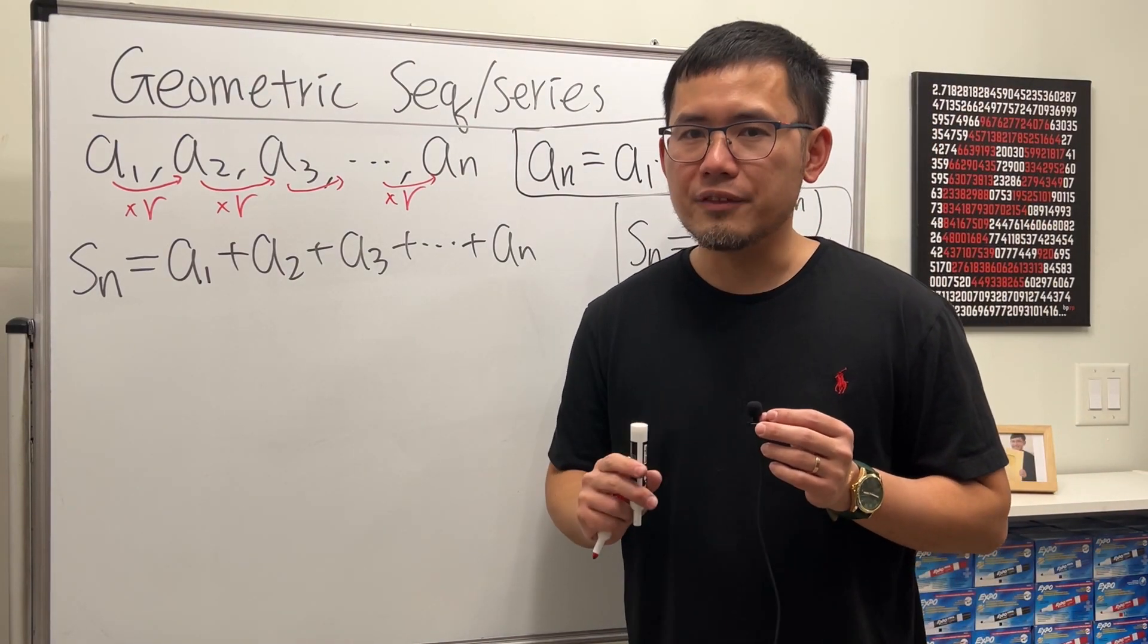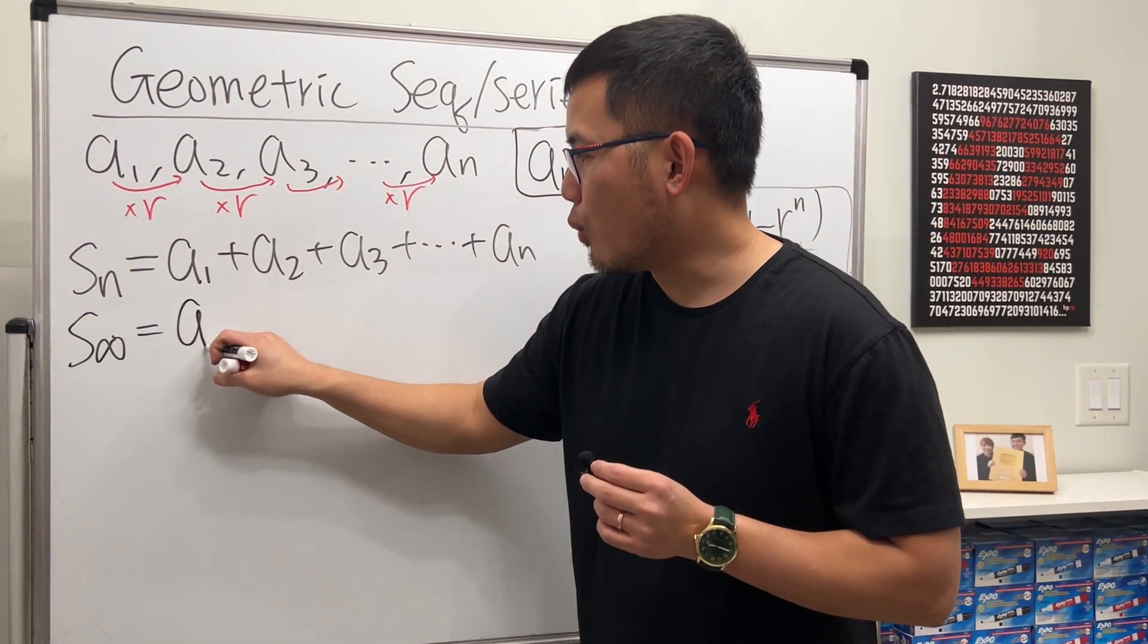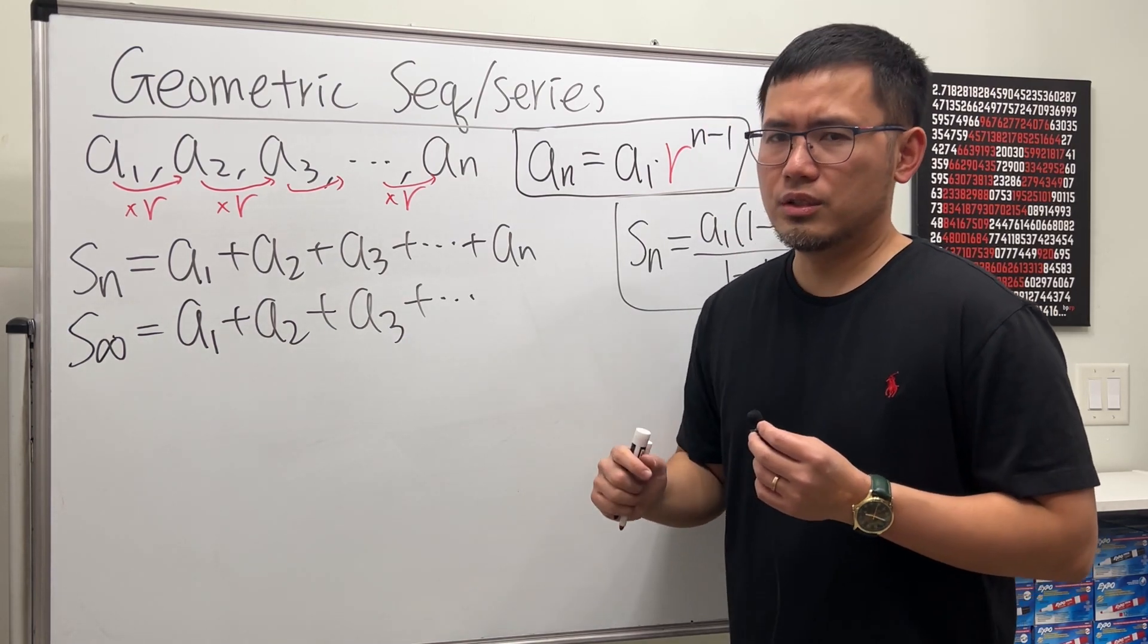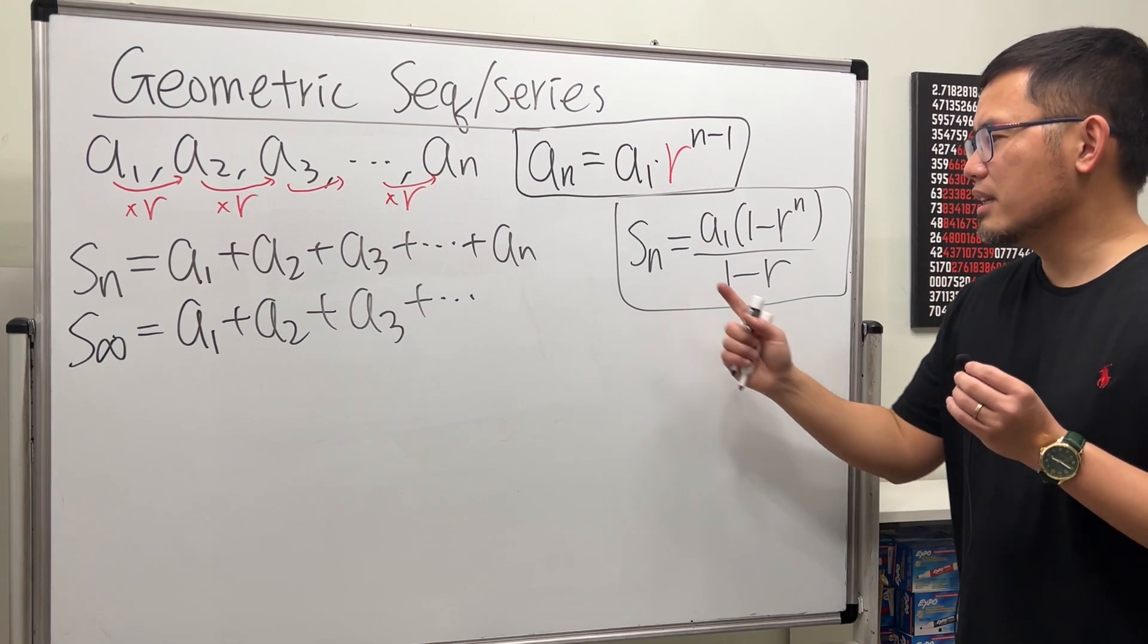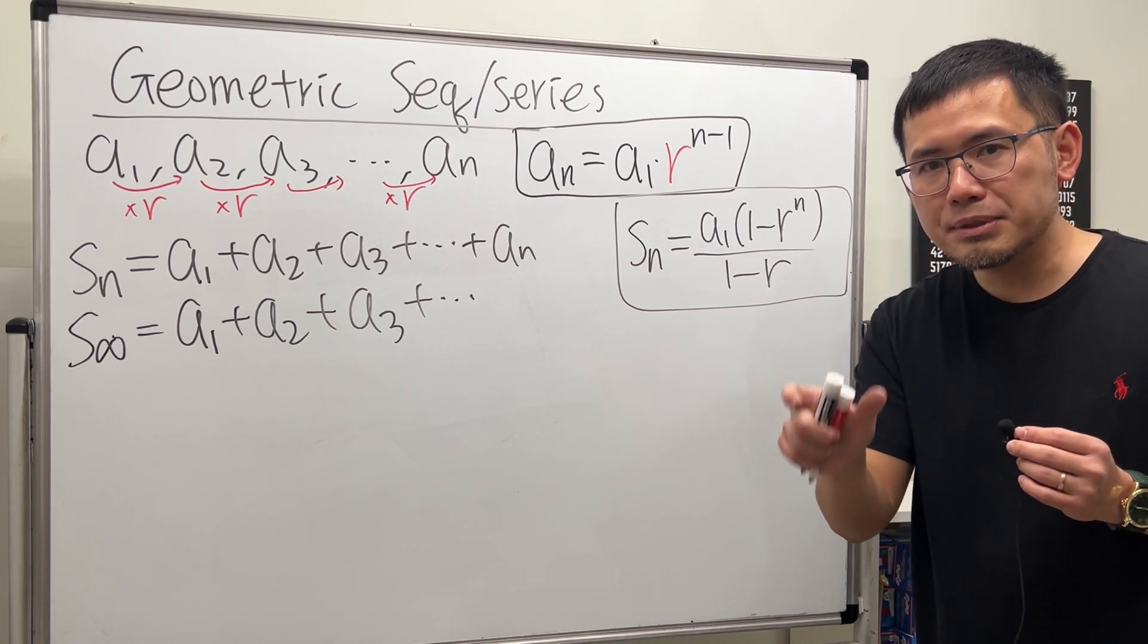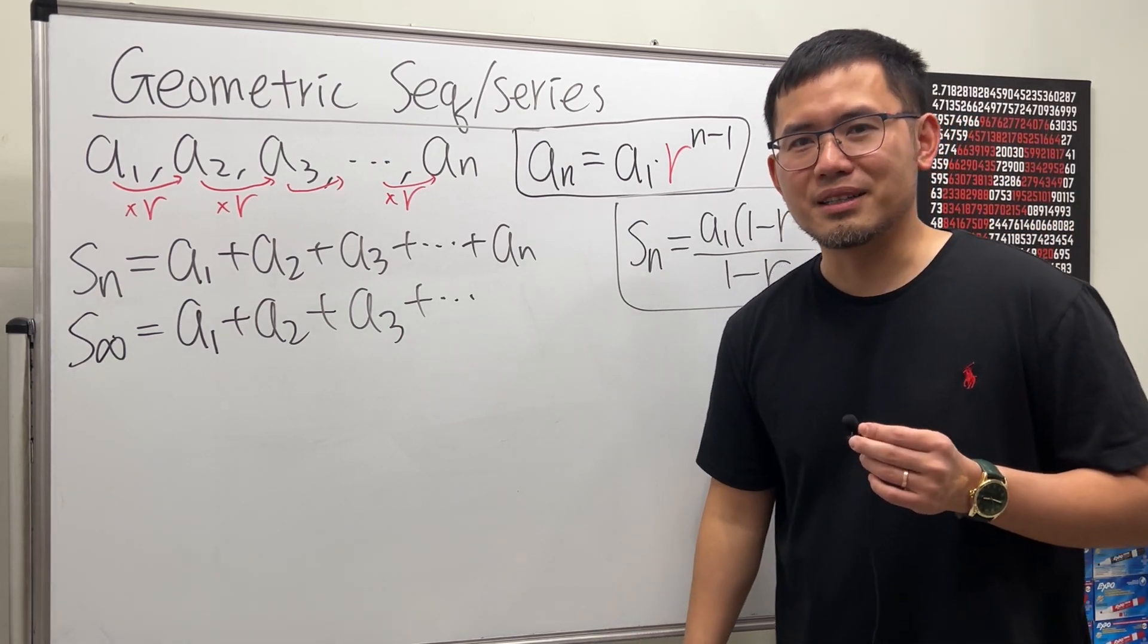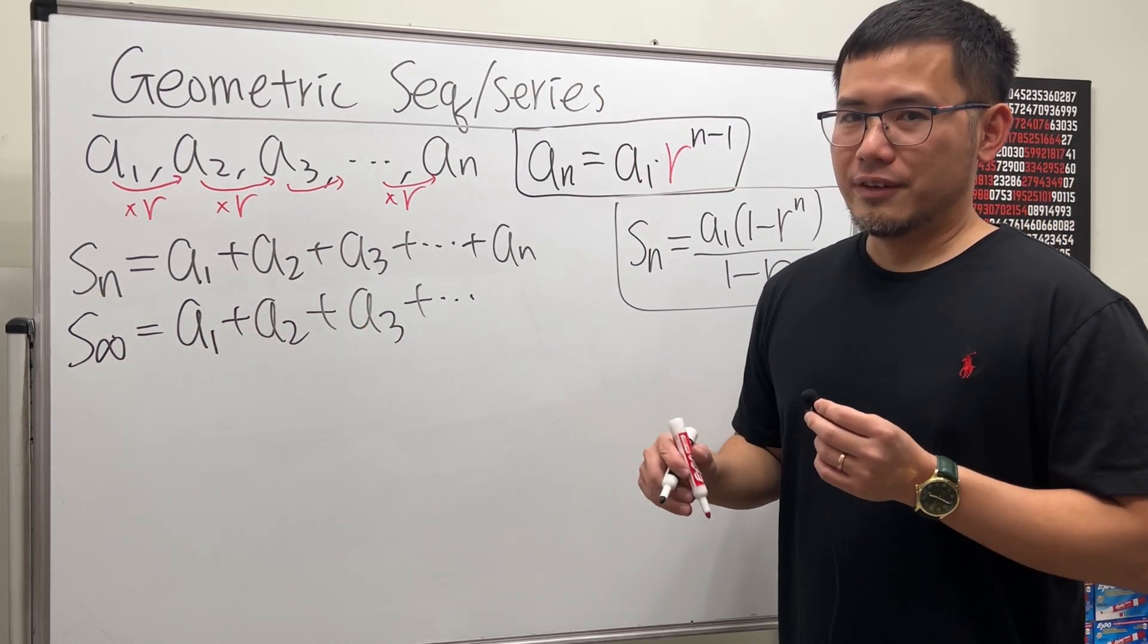Now, for the last one, we have S infinity. And that is, we are adding infinitely many of these terms. So, we will have a1 plus a2 plus a3 plus dot dot dot, and we are not going to stop. And you might be wondering, if we are adding infinitely many things, shouldn't we just get infinity? Well, no. It depends. It depends on the common ratio. So, in fact, if you have done some calculus, then you can just look at this equation and say, take the limit as n goes to infinity. If the absolute value of r is less than 1, then this portion here will go to 0, and you have the formula for S infinity already. But let's not do that for this video because this is not a calculus channel. I will show you guys a more fun way to do it.